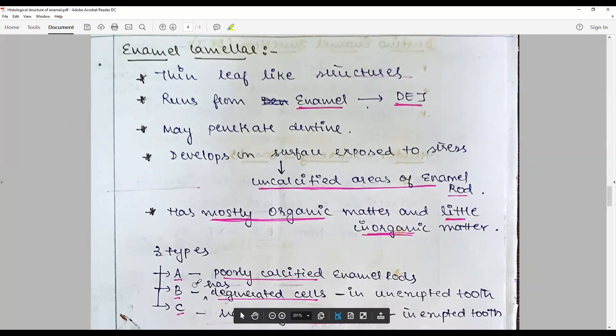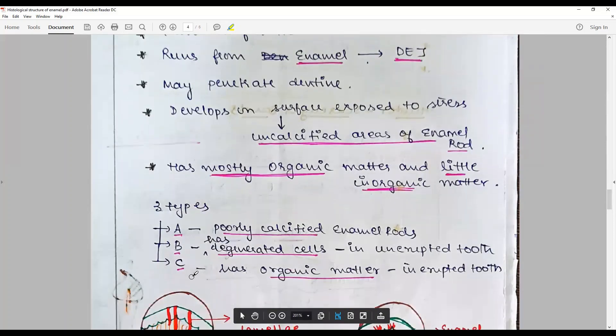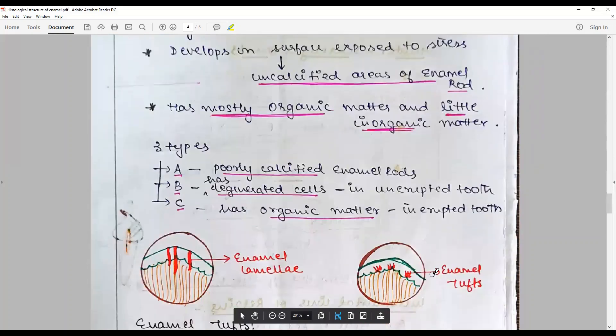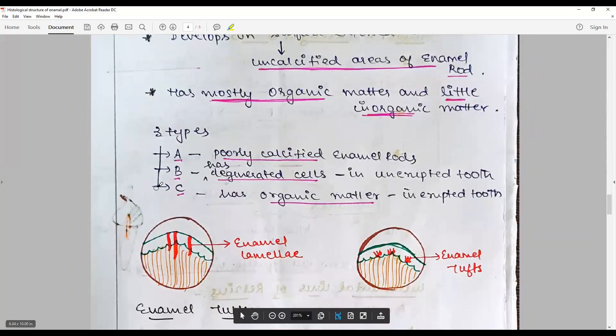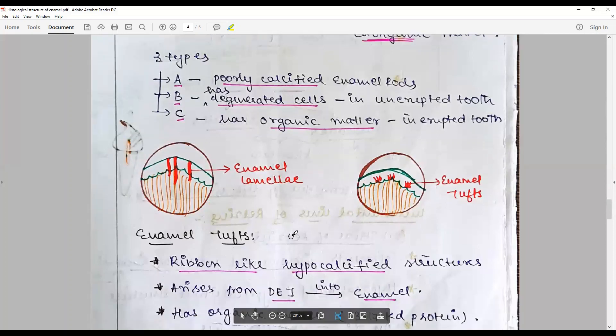They can be classified into three types - Type A, Type B, Type C. Type A is poorly calcified enamel rods. Type B has degenerative cells often seen and associated with an erupted tooth. Type C has organic material in erupted tooth. You draw a nice representative diagram of enamel lamellae using HB pencils or a felt pen. If you are confident, use a felt pen. Otherwise, go with the HB pencils. HB pencils are preferred.